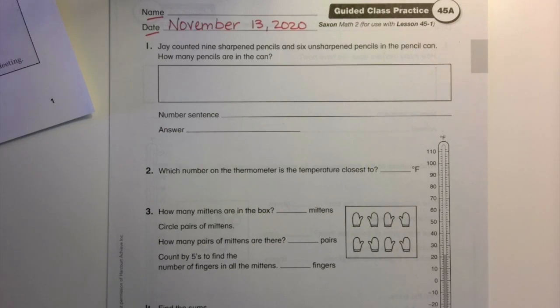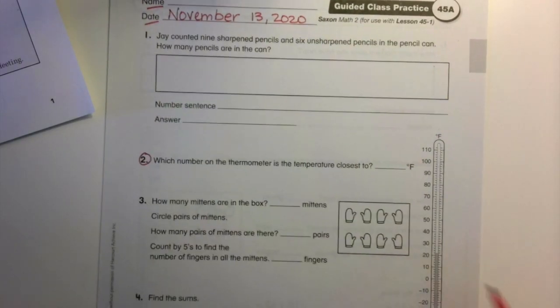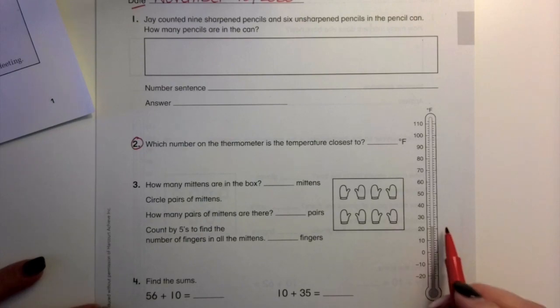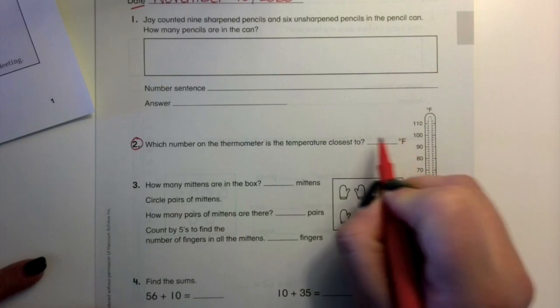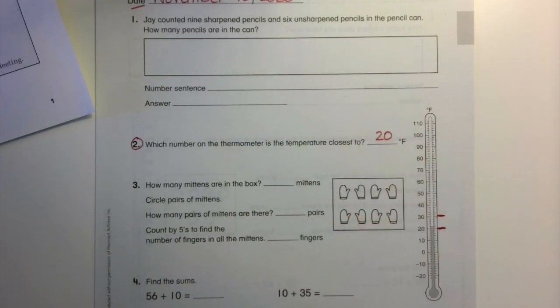I would like to do number two with you. Which number on the thermometer is the temperature closest to? So if I'm looking at my thermometer, I can see that it's in between 20 and 30. I want to round it to the closest one. Is it closer to 20 or closer to 30? Write 20. So go ahead and write 20 for 20 degrees Fahrenheit.